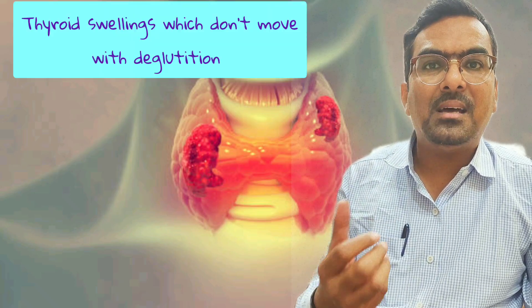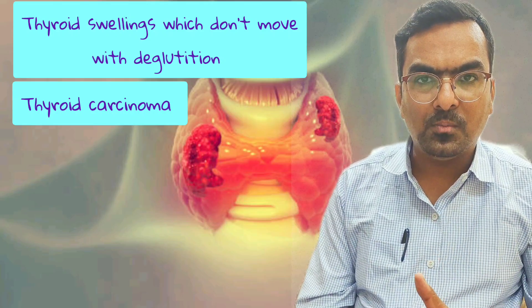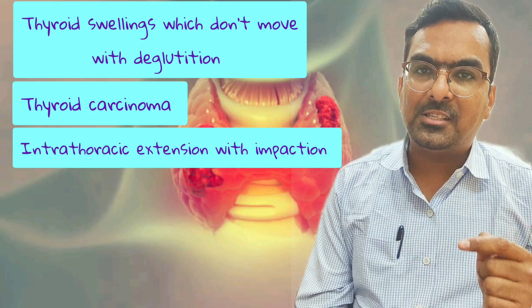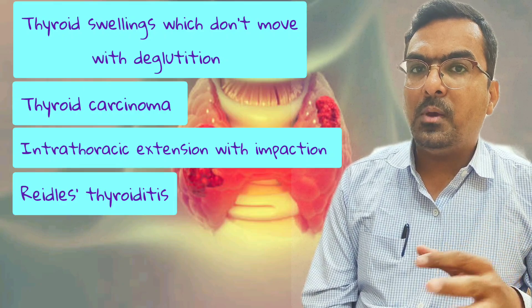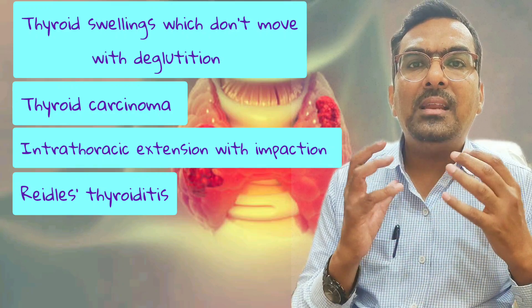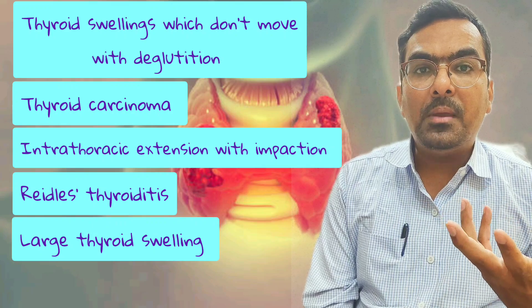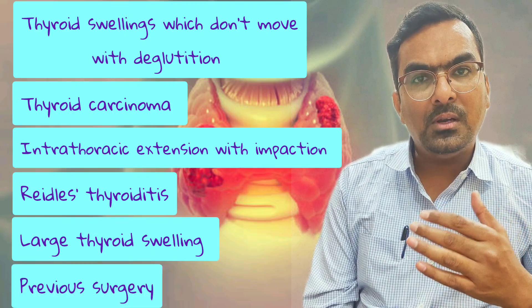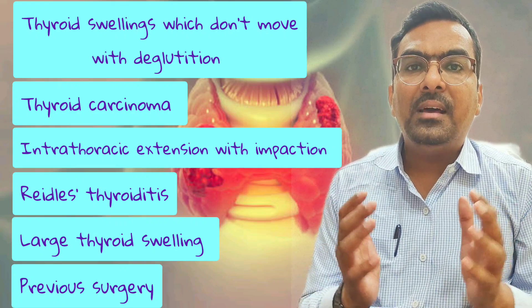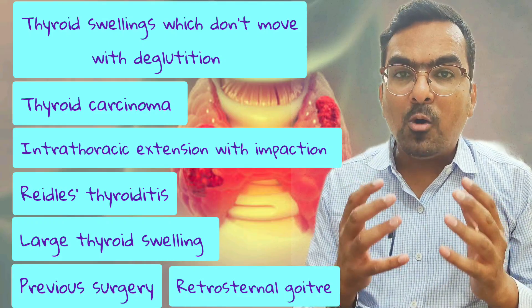Not all thyroid swellings move with deglutition. There are certain conditions where thyroid swelling might not move with swallowing. Examples are: carcinoma of the thyroid, especially with extensive local infiltration into surrounding tissue; intrathoracic retrosternal extension with infiltration and impaction; Riedel's thyroiditis, which does not move because of encasement of the trachea; massive thyroid enlargement making movement difficult; previous surgery leading to fixation and fibrosis; and retrosternal goiter, which may not show movement due to its position.